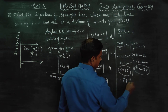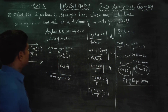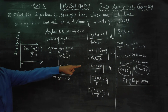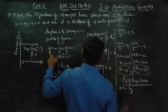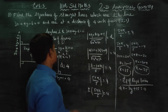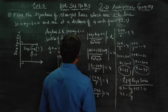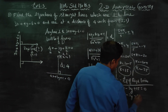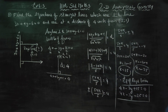Therefore, the equations of the required lines are: 4x - 3y + 15 = 0 and 4x - 3y - 25 = 0. These are the lines perpendicular to 3x + 4y - 6 = 0 at a distance of 4 units from (2,1). Thank you.